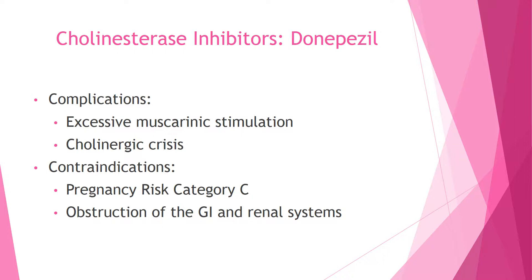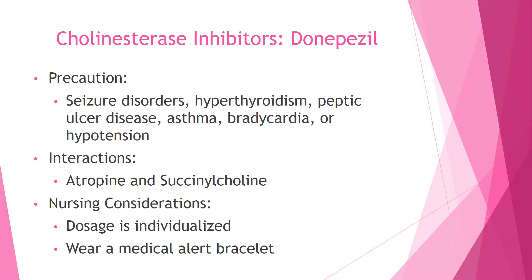Contraindications and precautions: this is pregnancy risk category C — risk over benefit. Obstruction of the GI and renal systems is contraindicated. Precautions apply for seizure disorders, hypothyroidism, peptic ulcer disease, asthma, bradycardia, or hypotension. With increased gastric secretions, peptic ulcer disease could worsen. Drug interactions include atropine and succinylcholine — succinylcholine, abbreviated 'sux,' is also used for intubation.